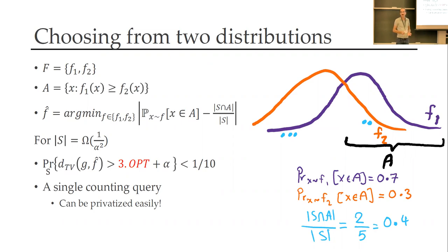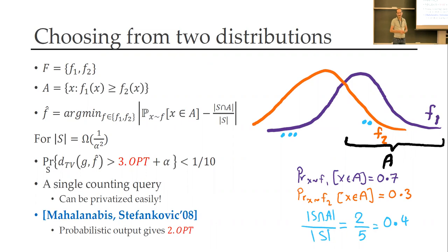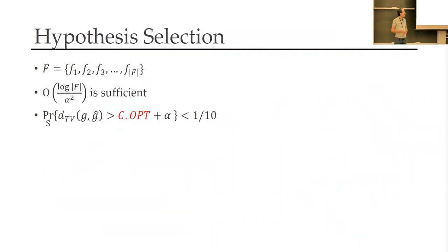How do we make the Scheffé test private? If you think about it, it's just a single counting query — how many points fall in set A — so you can make it private. There is a better version that achieves 2·opt, which is optimal, and you can also make that private easily because it just randomly chooses between f1 and f2 based on a weight. You can make this private as well.